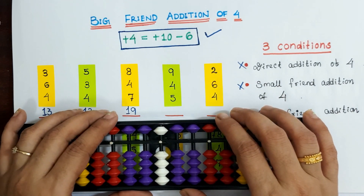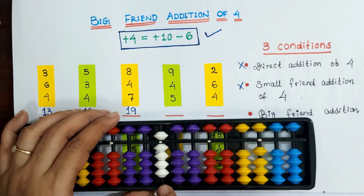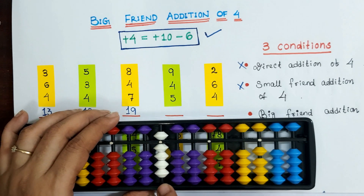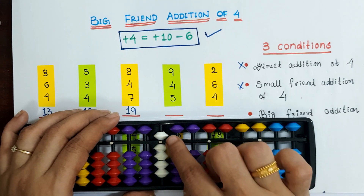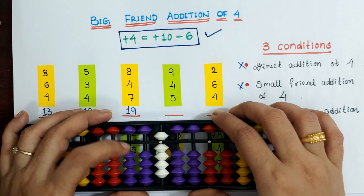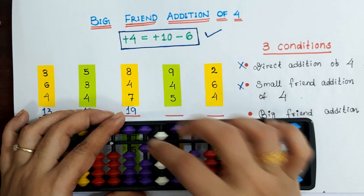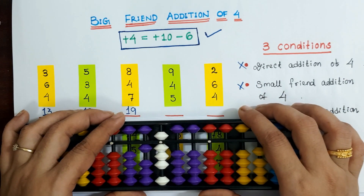Fourth example: 9 plus 4 plus 5. For 9 plus 4, we can't directly add 4 because we don't have sufficient bits at the one slot, so direct addition of 4 is not possible. Also, we are unable to apply the small friend addition of 4 as we have already used the bead of 5. So we apply big friend addition of 4: plus 10 minus 6, then plus 5. Answer is 18.